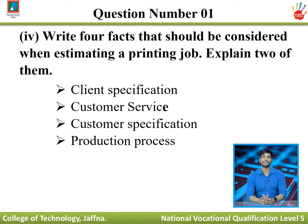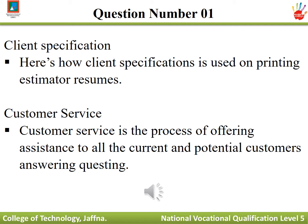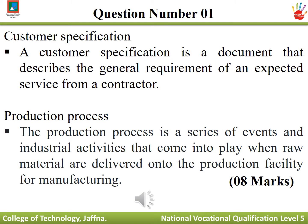Question number four: write four facts that should be considered when estimating a printing job, and explain two of them. Client specifications — this describes how client specifications are used in printing estimation. Customer service — customer service is the process of offering assistance to current and potential customers, answering questions. Production process — the production process is a series of events and industrial activities that come into play when raw materials are delivered to the production facility for manufacturing.